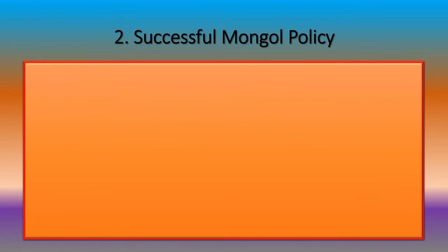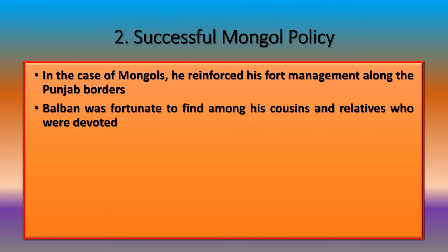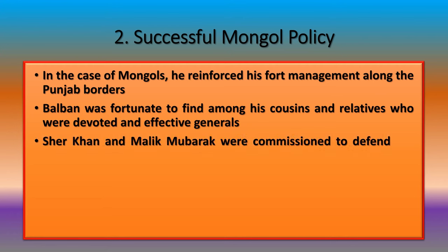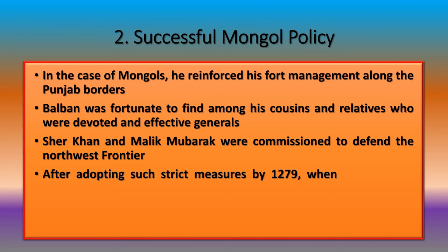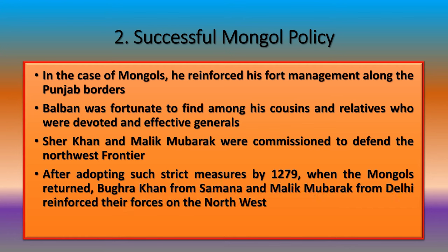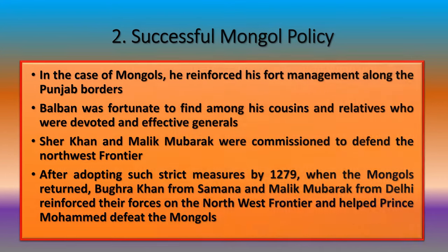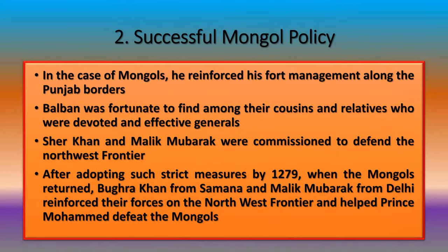Regarding his Mongol policy as Sultan, Balban reinforced his fort management along the Punjab borders. He was fortunate to find devoted and effective generals among his cousins and relatives — Shere Khan and Malik Mubarak were commissioned to defend the northwest frontier. By 1279, when the Mongols returned, Hugra Khan from Samana and Malik Mubarak from Delhi reinforced their forces on the northwest frontier and helped Prince Mohammed defeat the Mongols.